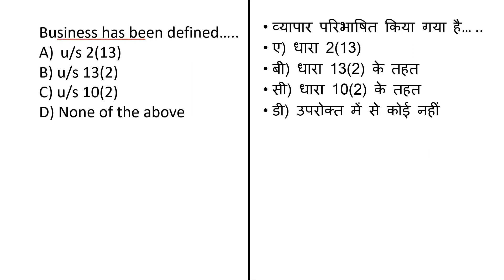The next question asks: 'Business has been defined under which section?' Business simply means any economic activity carried out for earning profit. Under Section 2(13) it has been defined. The first option is Section 2 clause 13, which includes any trade, commerce, manufacturing activity, or any adventure or concern in the nature of trade, commerce, and manufacture.